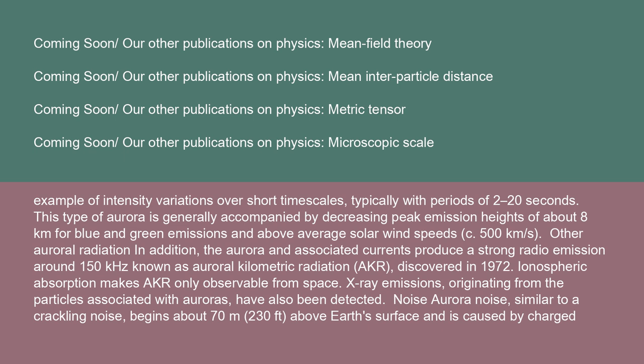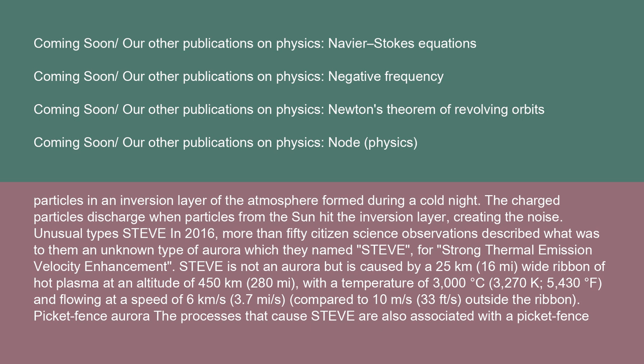In addition, the aurora and associated currents produce a strong radio emission around 150 kHz known as auroral kilometric radiation (AKR), discovered in 1972. Ionospheric absorption makes AKR only observable from space. X-ray emissions from particles associated with auroras have also been detected. Aurora noise, similar to a crackling noise, begins about 70 meters above Earth's surface and is caused by charged particles in an inversion layer of the atmosphere formed during a cold night, which discharge when particles from the sun hit the inversion layer.